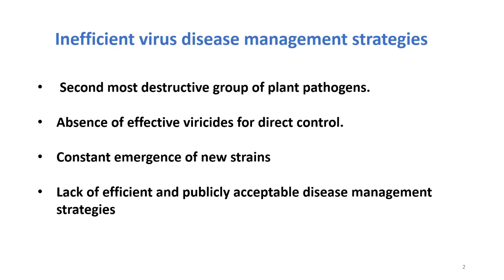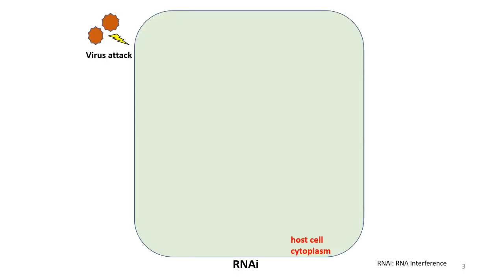Basically there is a lack of efficient and publicly acceptable disease management strategy. With the current increase in global food demand, there is an urgent need for such a strategy to be developed. Scientists thought: why not make use of RNAi, or RNA interference, which is a natural cellular post-defense mechanism that takes place in eukaryotic cells — be it plants or animals — when they are under virus attack.